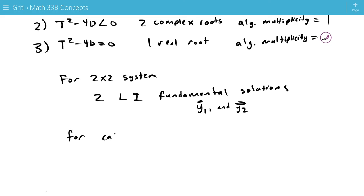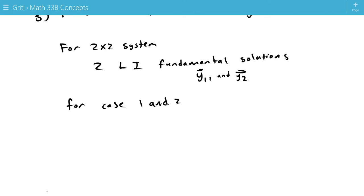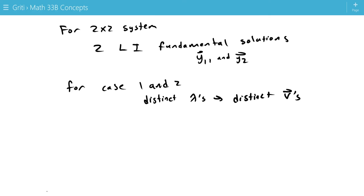So, for the first two cases, since we have two distinct eigenvalues, we'll get distinct eigenvectors, which will lead to linearly independent solutions. We have distinct eigenvectors, which guarantee linear independence. Whenever we have distinct eigenvalues, we're going to get linearly independent eigenvectors.